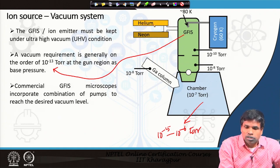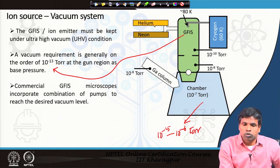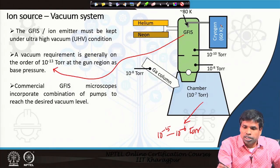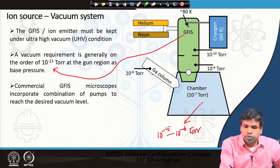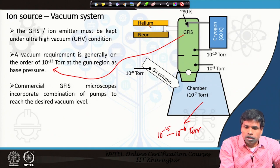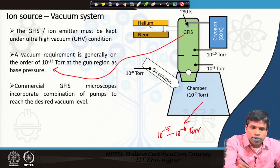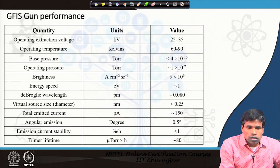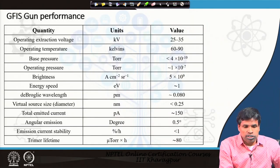In a dual-beam column configuration, we can have multiple gases used for different purposes. The gun performance and other details will be discussed in the next lecture.